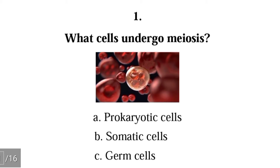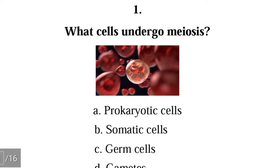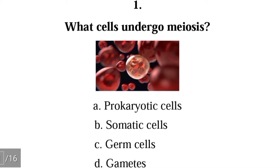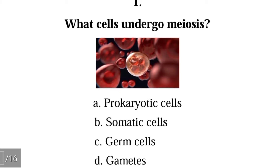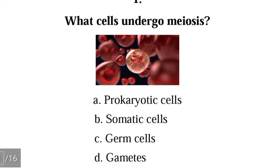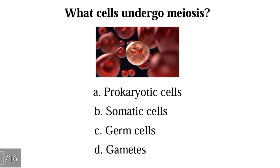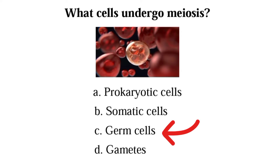Question 1: What cells undergo meiosis? Options: prokaryotic cells, somatic cells, germ cells, and gametes. The correct answer is germ cells. The germ cells are the reproductive cells that undergo meiosis.